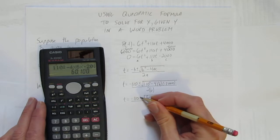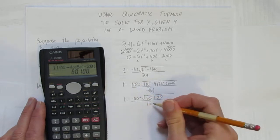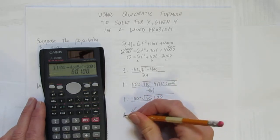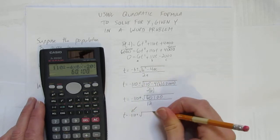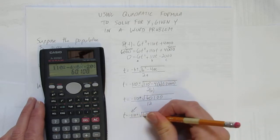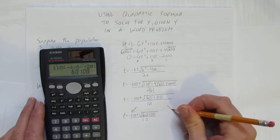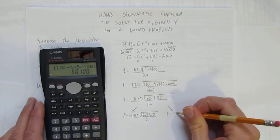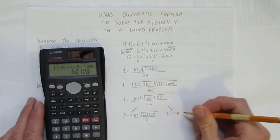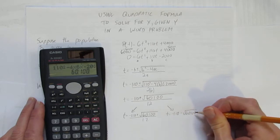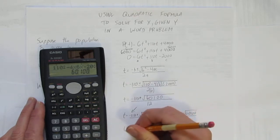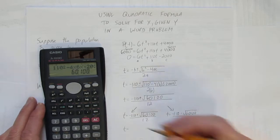Now I split it into two pieces. This plus or minus means two possibilities: either t is negative 110 plus the square root of 60,100 all over 12, or t is negative 110 minus the square root of 60,100 all over 12.